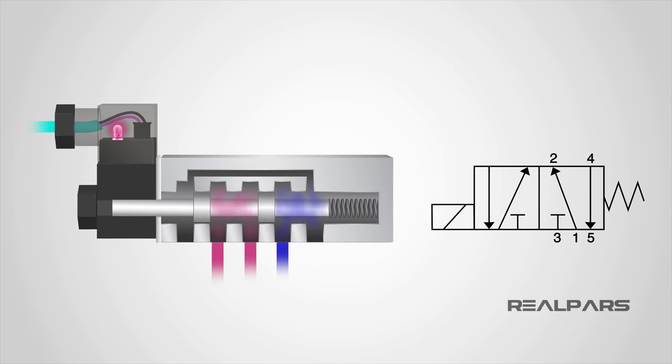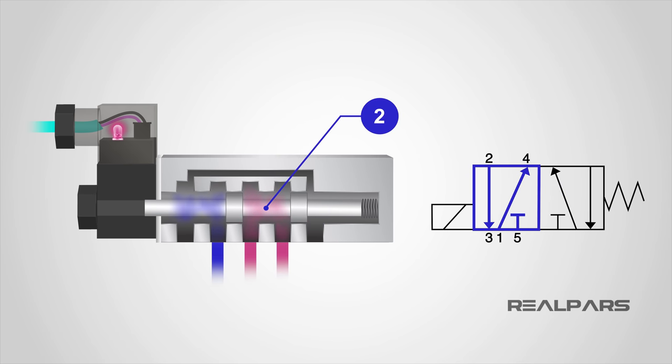When we see a valve schematic, we can see it is made up of boxes, each containing a number of lines and arrows. The number of boxes that make up a valve symbol indicates the number of possible positions the valve has. Flow direction is indicated by the arrows in each box. These arrows represent the flow path the valve provides when it is in each position.